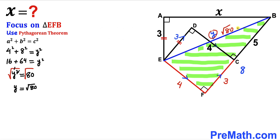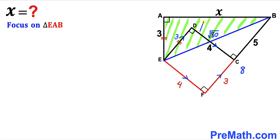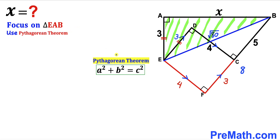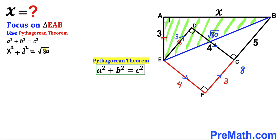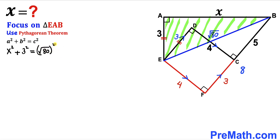Now we focus on right triangle EAB and apply the Pythagorean theorem. The hypotenuse is √80 and the two other legs are 3 and x. Filling in the formula: x² + 3² = (√80)². The square and square root undo each other, giving us x² + 9 = 80.